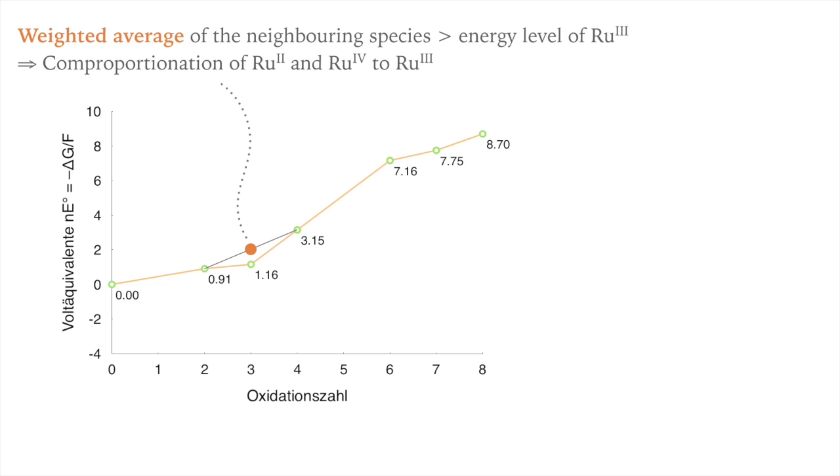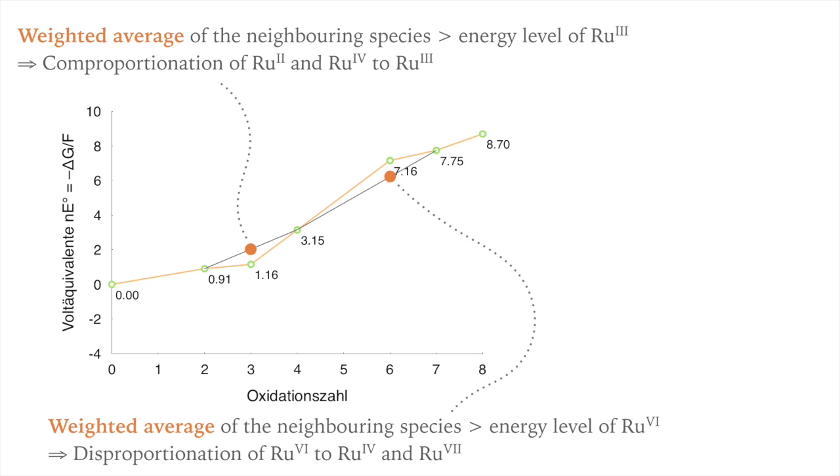Ruthenium 6, on the other hand, lies on a convex point. The weighted average of species 4 and 7 lies below the energy level of ruthenium 6 and therefore this state tends to disproportionate.